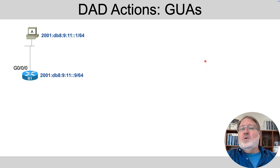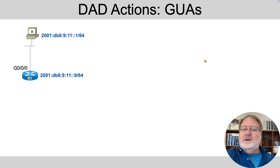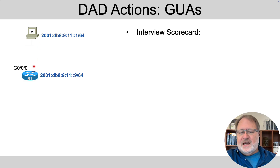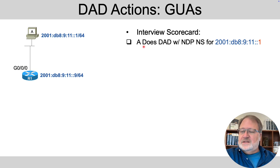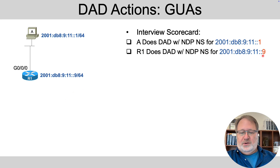Let's talk about what I want to hear from them about how DAD is used. It's one thing to say duplicate address detection is how a host detects if its address is used by another device so it won't use it. But if we focus on that upper subnet, A and R1 both will do DAD, and they'll do it for their own global unicast addresses — A does DAD for its GUA, and R1 does DAD with its global unicast address.